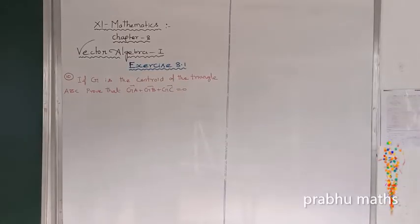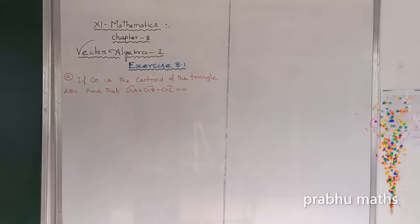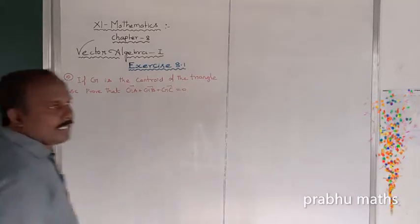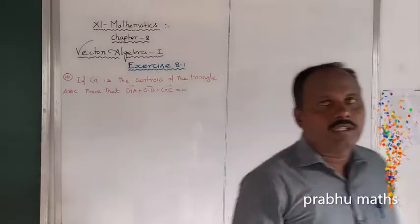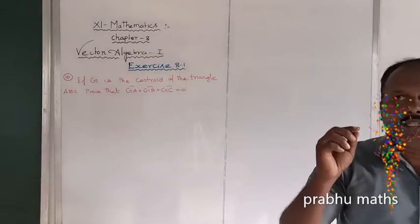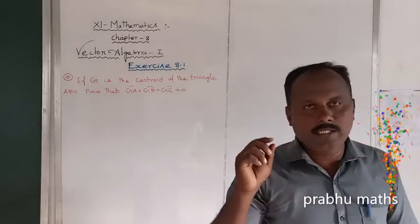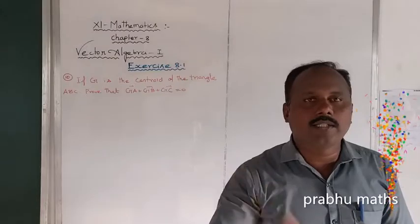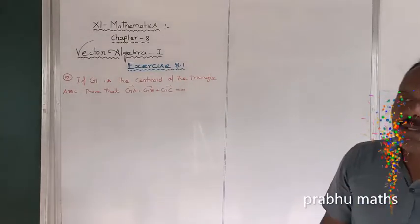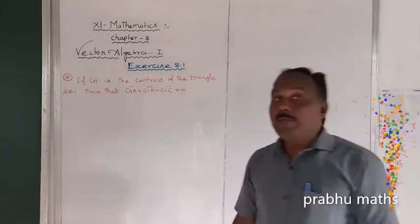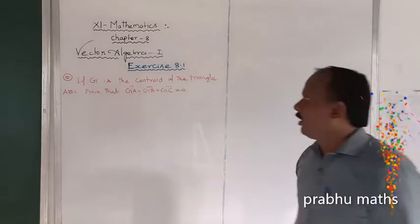x is 8.1. If G is a centroid, that means centroid is defined as x1 plus x2 plus x3 divided by 3. That is called centroid. So the 3 medians passing through one point — that is called centroid.